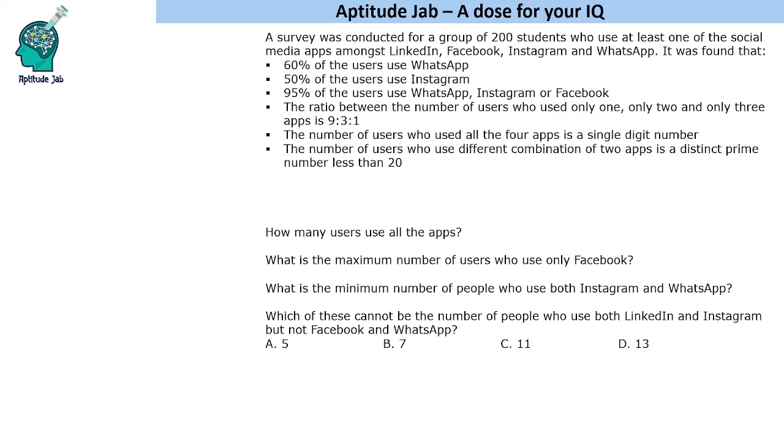Now by just looking at the question itself, we figure out that it's a Venn diagram problem and we are given some of the data points regarding the numbers. Since there are four elements in this set, we will have a Venn diagram like this. So these apps are LinkedIn, Facebook, Instagram and WhatsApp.